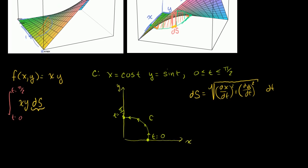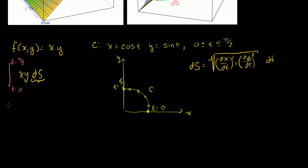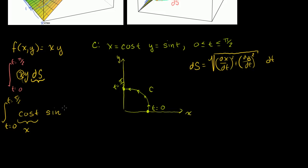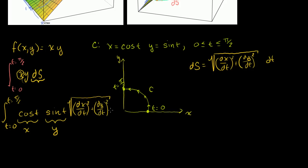We want everything in terms of t, so instead of writing x times y, let's substitute the parametric form. Instead of x, let's write cosine of t — that is x on this curve. And then times y, which we're saying is sine of t. All I did is rewrite x and y in terms of t. Then times ds, which is the square root of (dx/dt)² + (dy/dt)² times dt. And now we just have to find these two derivatives.